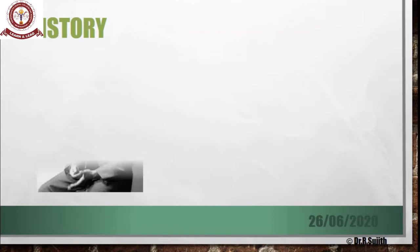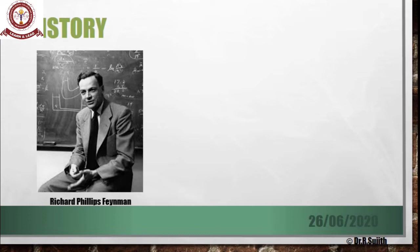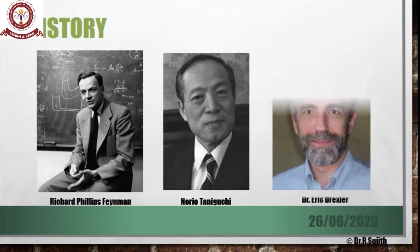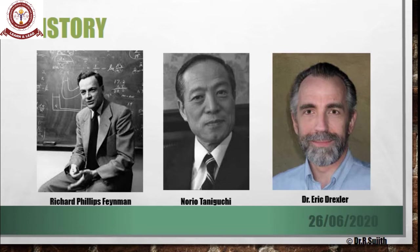Coming to the history, Richard Phillips Feynman is the first person who gave the concept of nanotechnology. He spoke about miniaturization of computers and storing large amounts of data in a small piece — a small container — but he never used the term nanotechnology. Later, Norio Taniguchi is the person who coined the term nanotechnology, and then Dr. Eric Drexler used Feynman's concept and published a book on nanotechnology.